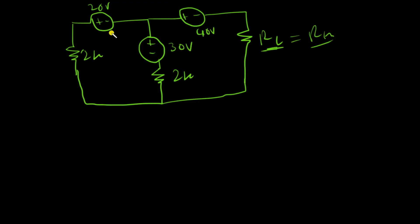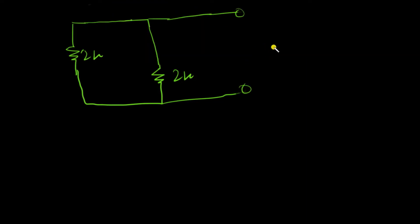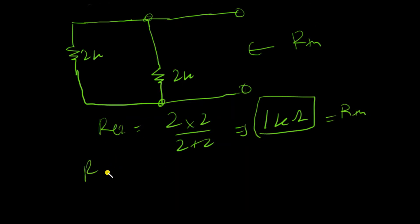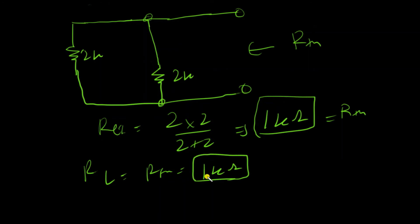Since there are only independent sources, I can use the simple method of removing the sources. Voltage sources are replaced with short circuits. Now I find R_thevenin: the two resistors are connected between the same pair of nodes, so they are in parallel. The equivalent resistance is (2×2)/(2+2) = 1 kΩ. So R_thevenin = 1 kΩ, meaning RL should equal 1 kΩ for maximum power transfer. If you solve the circuit and find the current, you'll confirm this is correct.